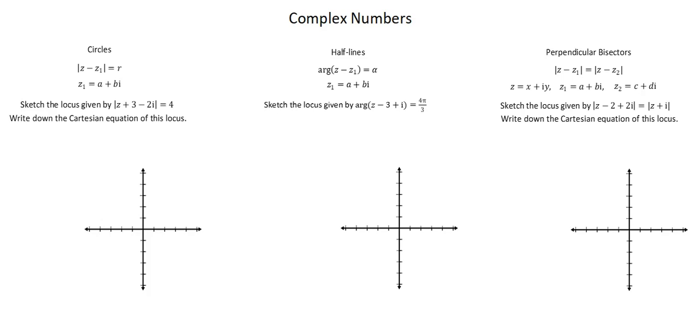Starting with circles, the general form for a circle is the modulus of z minus z1 equals r, z1 equals a plus bi. Our requirement reads, sketch the locus given by the modulus of z plus 3 minus 2i equals 4. Write down the Cartesian equation of this locus.